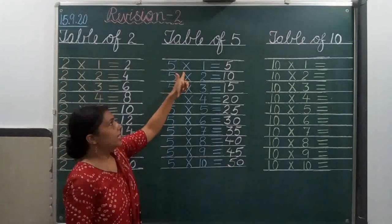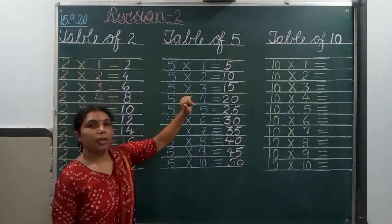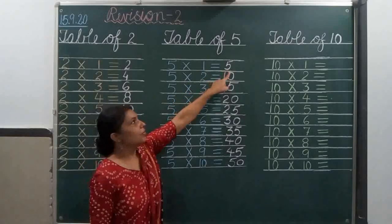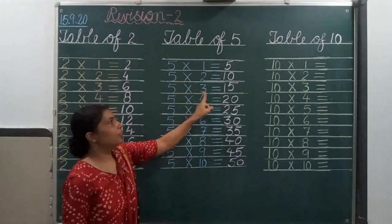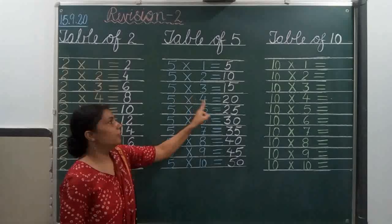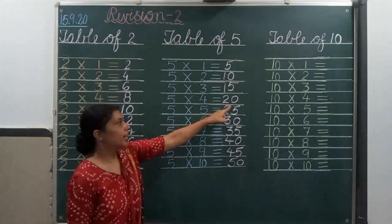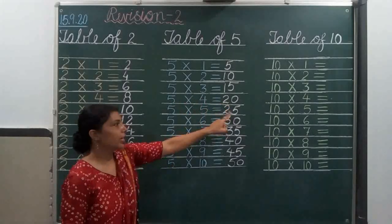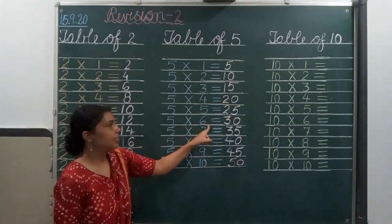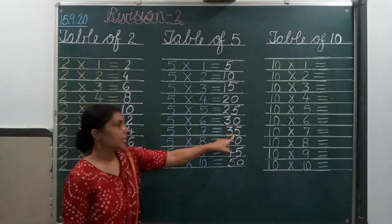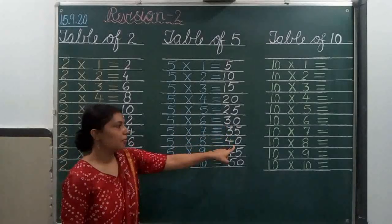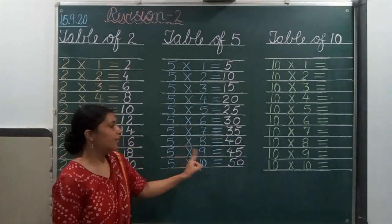Let's revise the table of 5. 5 1's are 5, 5 2's are 10, 5 3's are 15, 5 4's are 20, 5 5's are 25, 5 6's are 40, 5 7's are 35, 5 8's are 40, 5 9's are 45, 5 10's are 15.